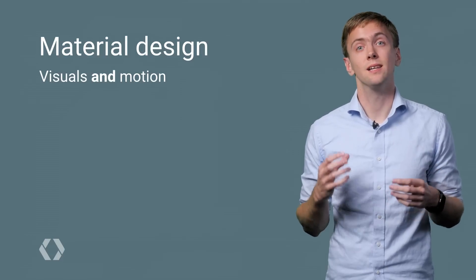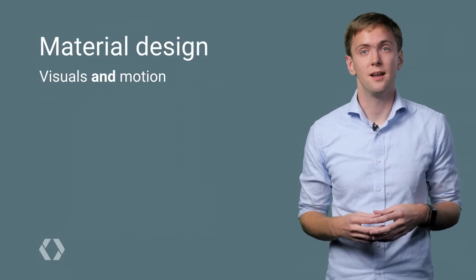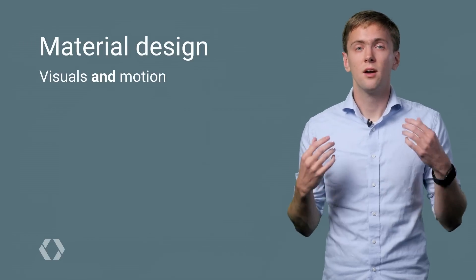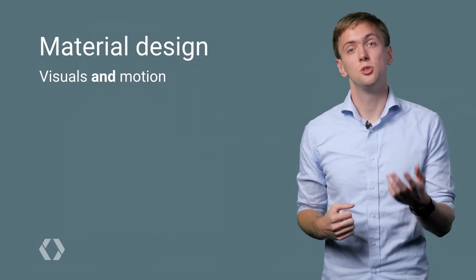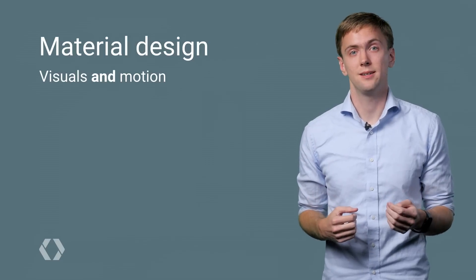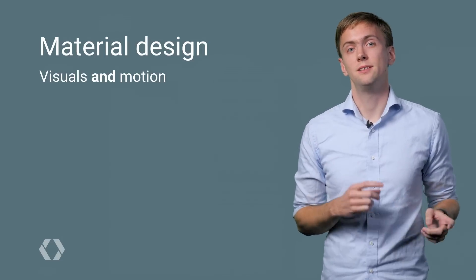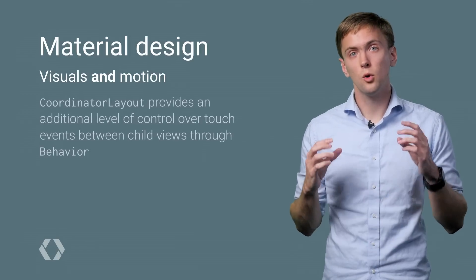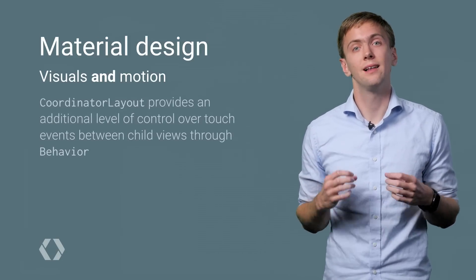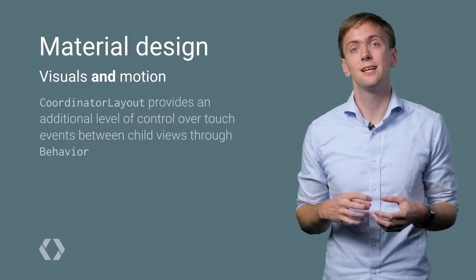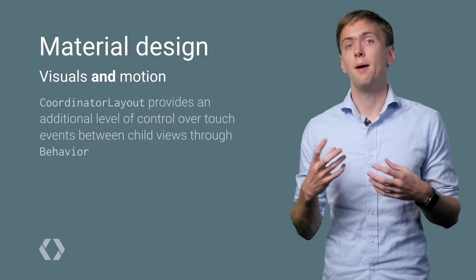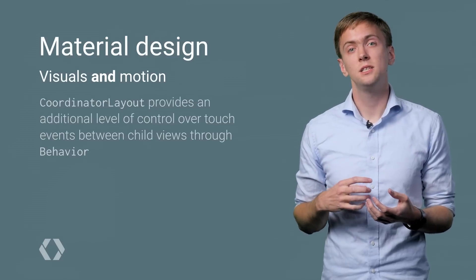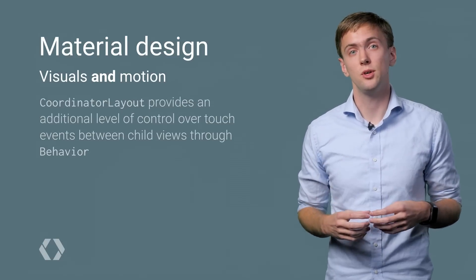That takes care of a lot of the visuals of material design. What about the motion side of material design? Coordinated motion is critical to a great experience. That's why the design library is introducing coordinator layout — a new layout that allows children to declare a behavior, giving them extra controls around touch events and the ability to build dependencies between views.